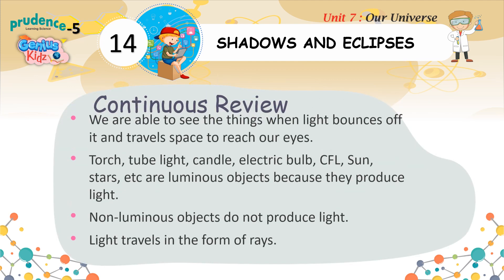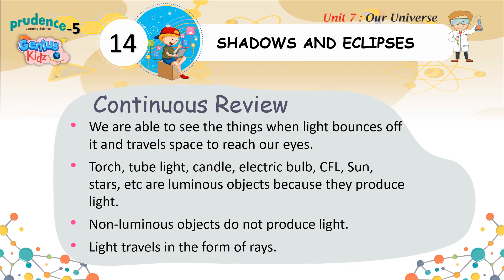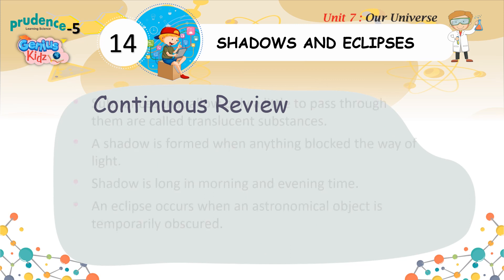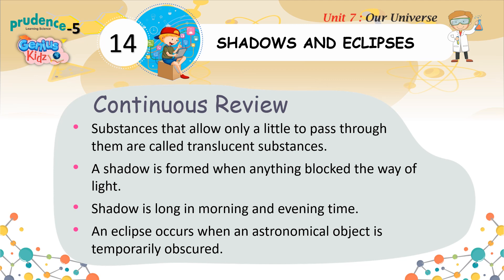Review: We are able to see things when light bounces off them and travels through space to reach our eyes. Torch, tube light, candle, electric bulb, CFL, sun, stars, etc. are luminous objects because they produce light. Non-luminous objects do not produce light. Light travels in the form of rays. Substances that allow only a little light to pass through them are called translucent substances. A shadow is formed when anything blocks the way of light. Shadows are long in the morning and evening. An eclipse occurs when an astronomical object is temporarily obscured.